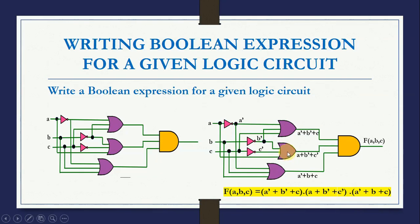The next OR gate has inputs B bar, C bar, and A — giving A + B bar + C bar. The third OR gate has inputs A bar, C, and B — giving A bar + B + C. All three OR gate outputs become inputs to an AND gate, giving the final expression: (A̅ + B̅ + C) · (A + B̅ + C̅) · (A̅ + B + C).